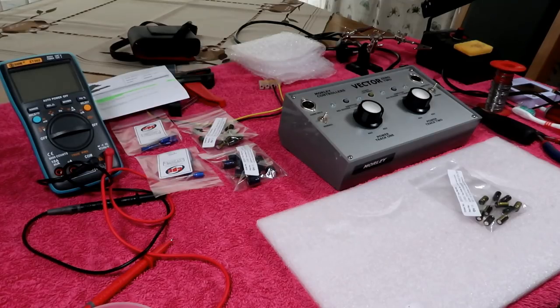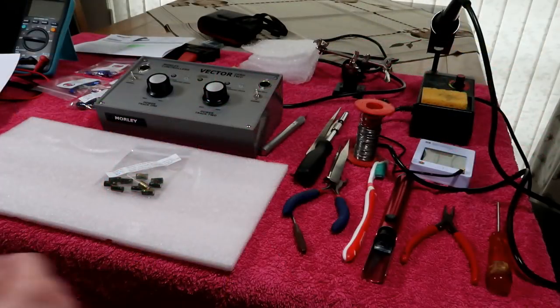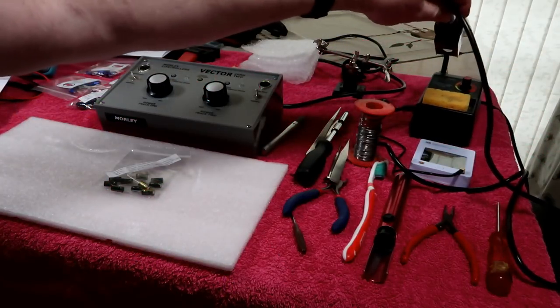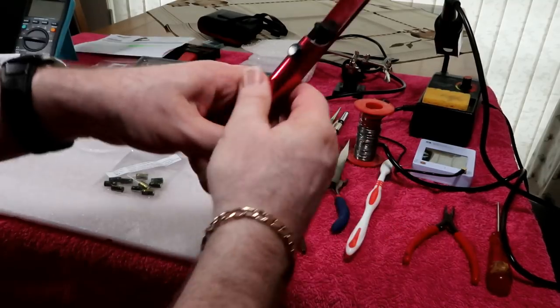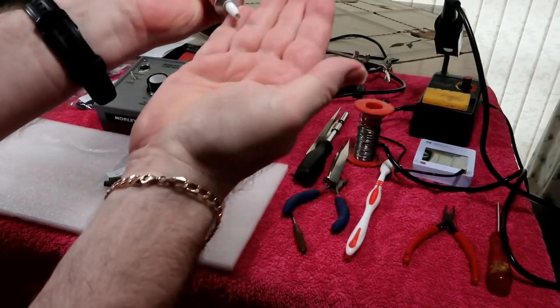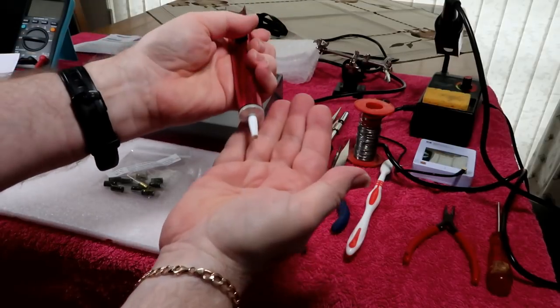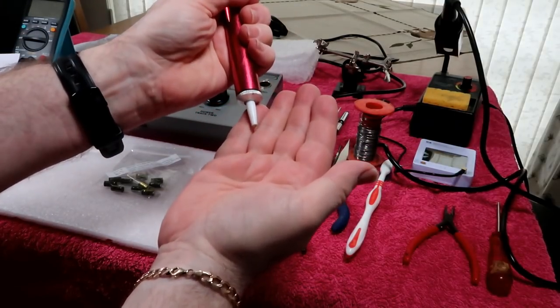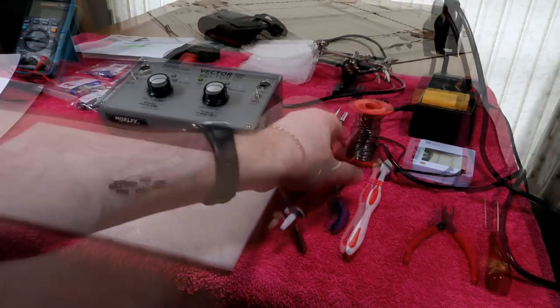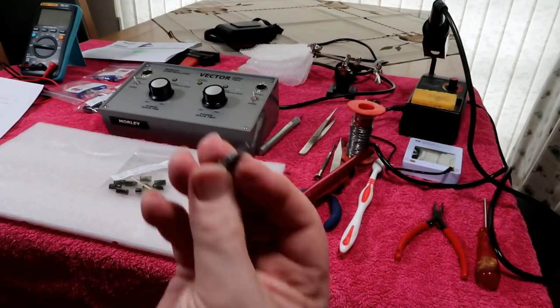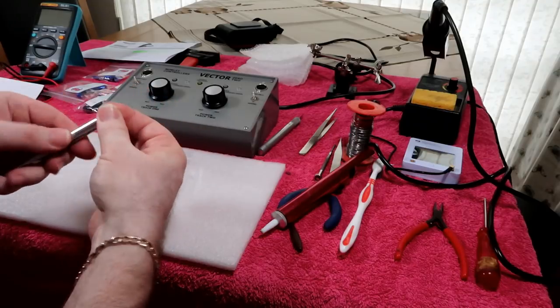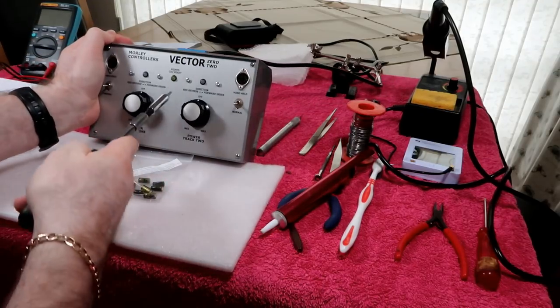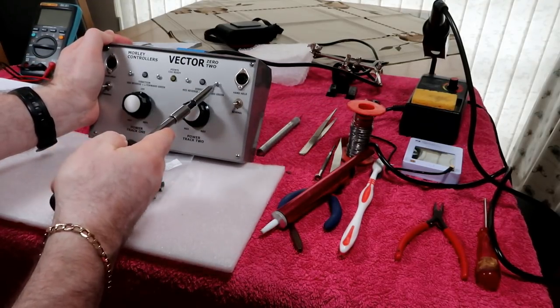Now then, you're going to require some tools to carry out this modification. You're going to need a temperature controlled soldering iron, you're going to need a solder sucker or desoldering braid. Now these are quite cheaply available, and what they do is suck off the solder once you melt it. You're also going to need a small security hex bit.